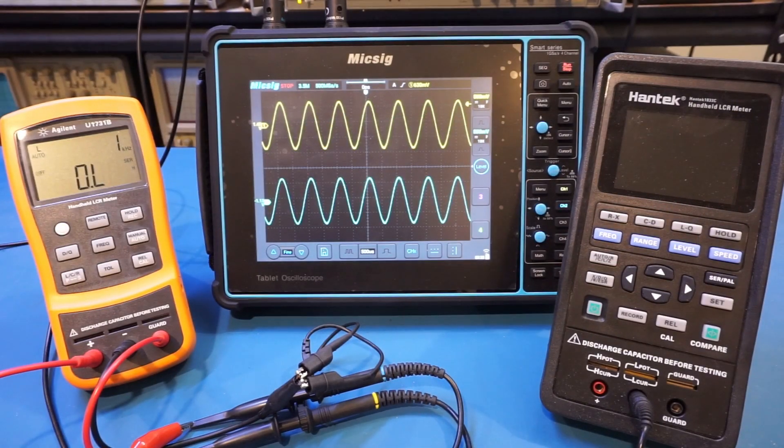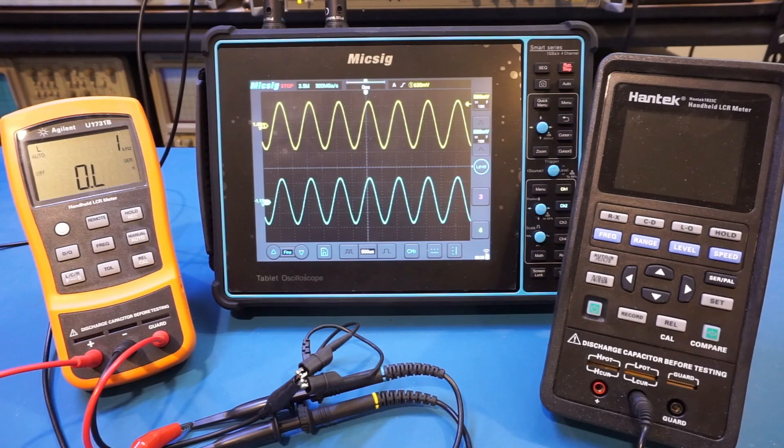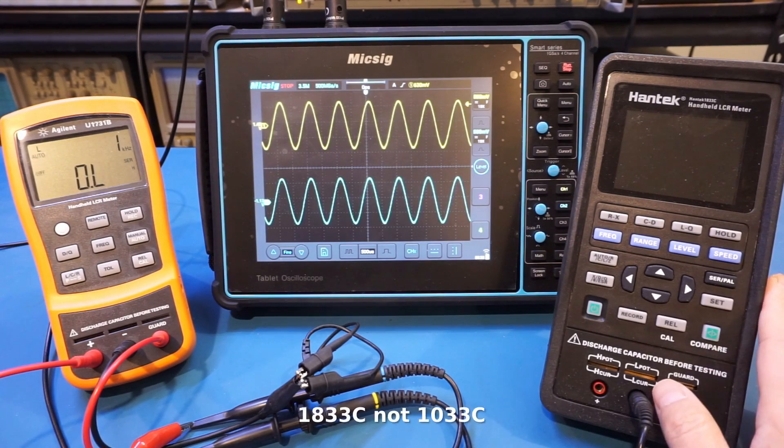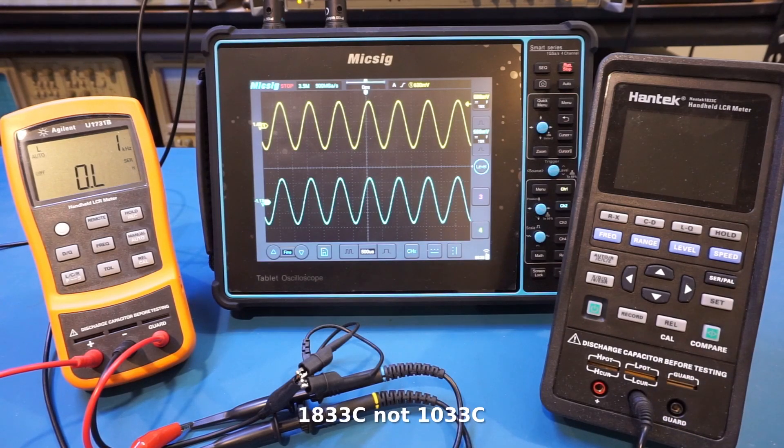Now that was really a long-winded introduction, but now you understand what the guard terminal is used for in an LCR meter and why it is important. Let's take a look at the Hantek 1033c we reviewed a while ago. Now after that review I was actually trying to do some measurement using the guard terminal and I noticed the results were not what I was looking for.